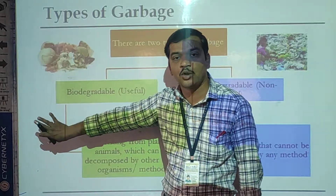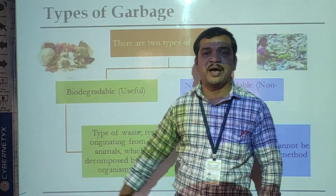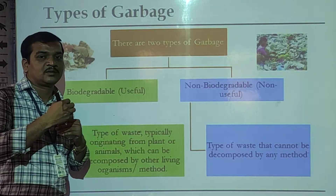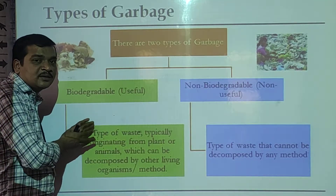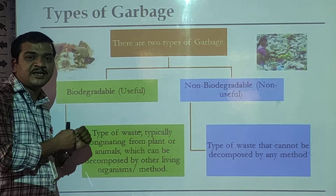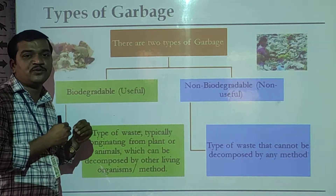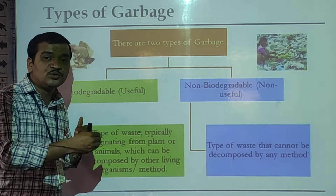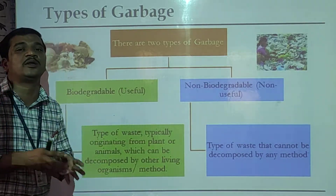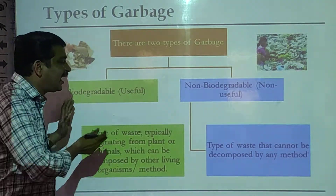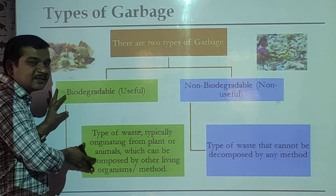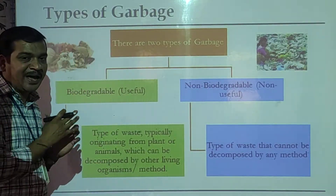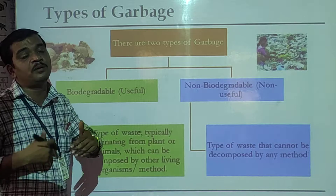Living organisms, specially the microorganisms like bacteria, break down components such as dry leaves, vegetable and fruit waste. Those things are converted into harmless substances called humus or organic matter. That humus or organic matter mixes into the soil or can be used as manure, which is good for the growth of plants.